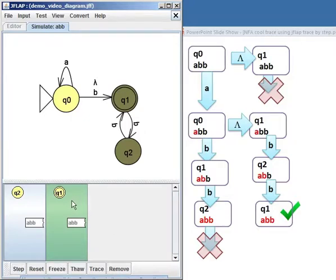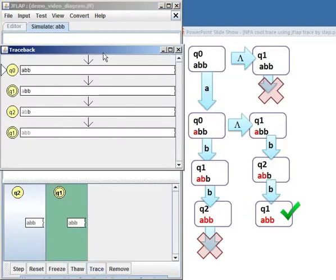If I want, I can click on this path now and say trace. And you can see that it shows me all my movements, but it sort of ignores the lambda jump. So it says, I started at Q0 with A, B, B, all of it unprocessed. I don't know how well you can see the gray in here. It's sort of hard for me to see.